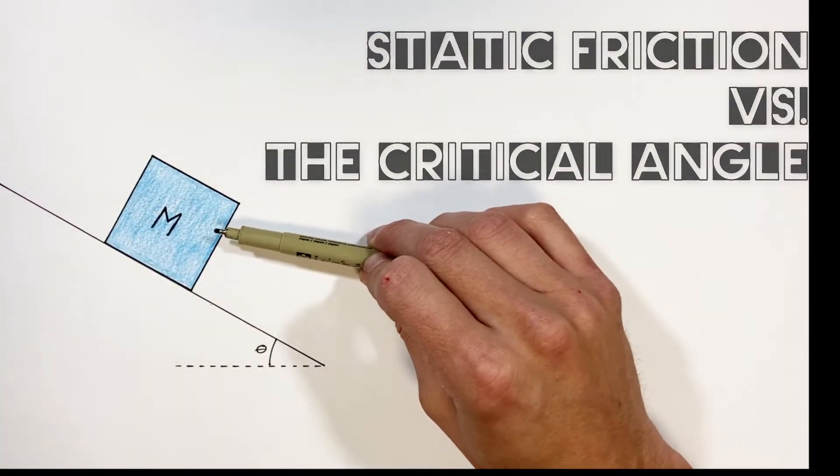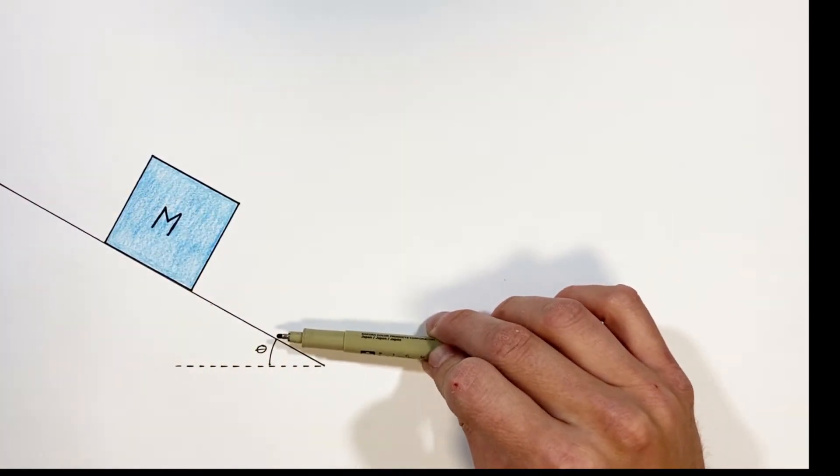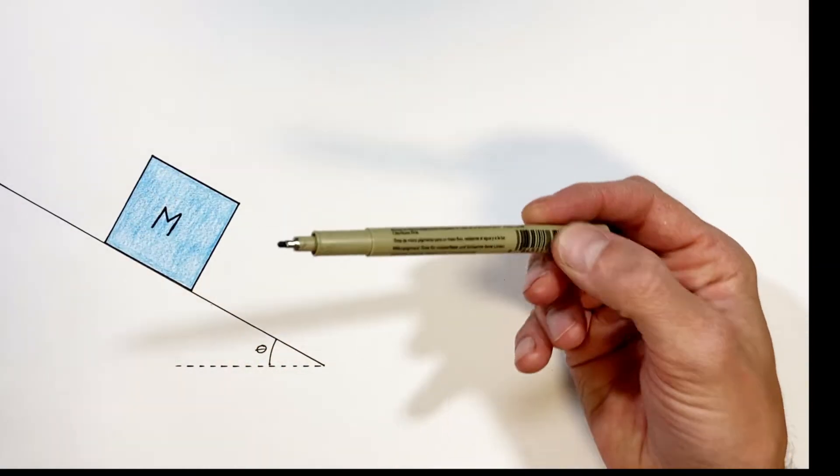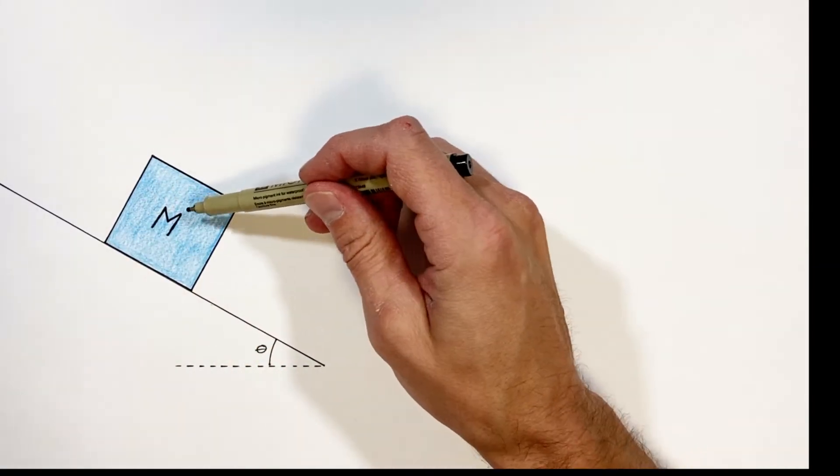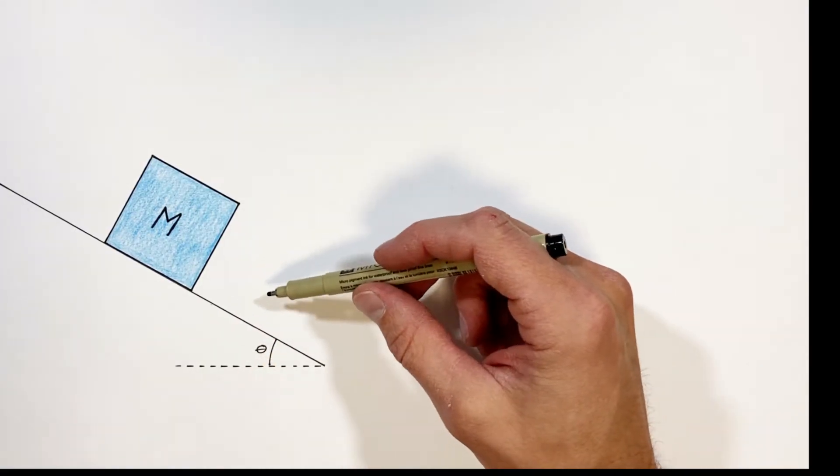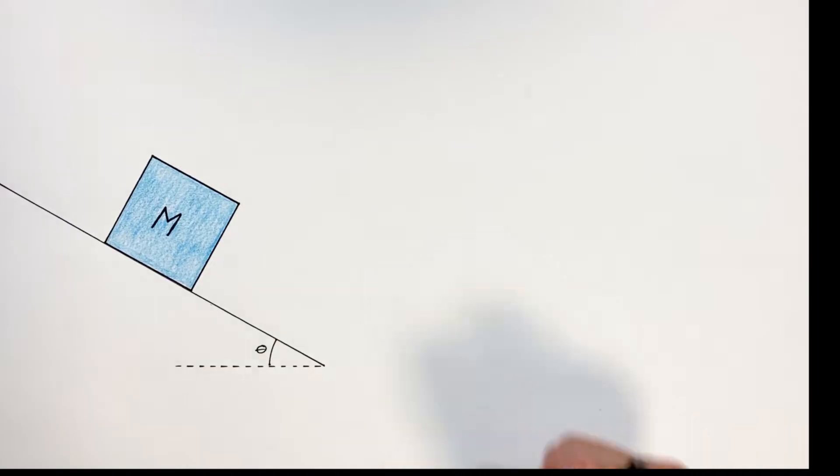So what we have here is a block against a rough surface like a ramp. Now, if we were to take this ramp and tilt it steeper and steeper, inevitably at some point that block is going to slide down the ramp. And the angle at which that block slides down the ramp is what we call the critical angle.